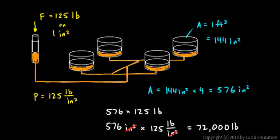Now the tradeoff, again, deals with force and distance. If you multiply the force by a factor of 576, then the distance is going to be divided by 576. So whatever distance gets pushed down over here, you're only going to get an upward distance of 1/576th of that.